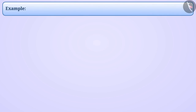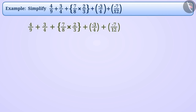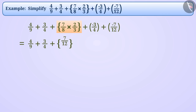Next example: simplify. First, we will solve the multiplication operation. Simplifying, 7 by 8 multiplied by 2 by 3 gives answer 7 by 12.